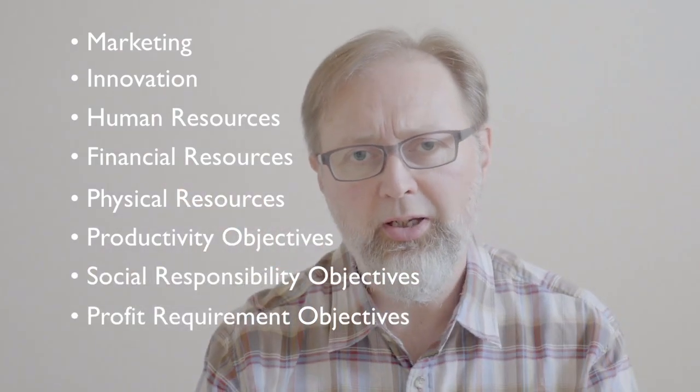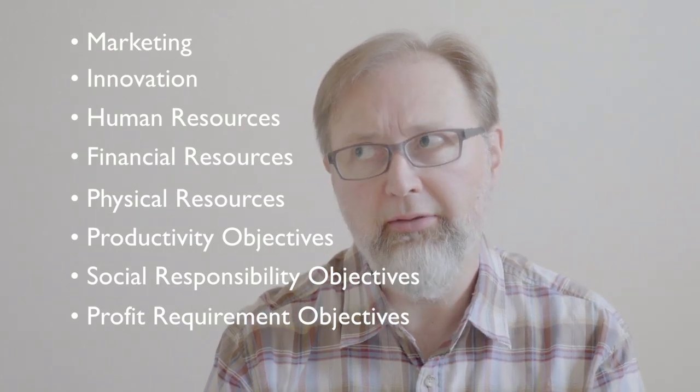Those are the eight things. One thing Tai says — and it's one of the times I wished he'd gone off on a tangent but didn't — is to create a strategy manual with these eight chapters. That's a brilliant idea, kind of like a business plan. You really have to understand all the facets of your business. Know those eight things: marketing, innovation, human resources, financial resources, physical resources, productivity objectives, social responsibility objectives, and profit requirement objectives — and understand how they relate to your business.